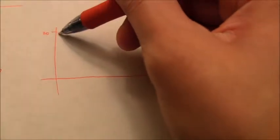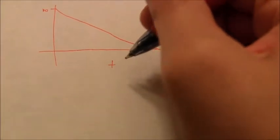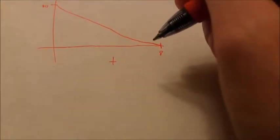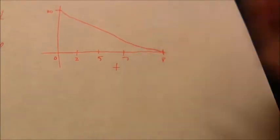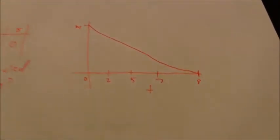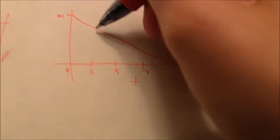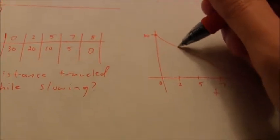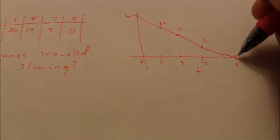I'll make a quick graph. I start out with values as high as 30 and they drop all the way to 0. Along the time axis, the graph ends at 8 seconds, with data points at 0, 2, 5, 7, and 8 seconds. The heights are: 30 at the start, 20 at 2 seconds, 10 at 5 seconds, 5 at 7 seconds, and 0 at 8 seconds. We can use those values to find the areas of our trapezoids.